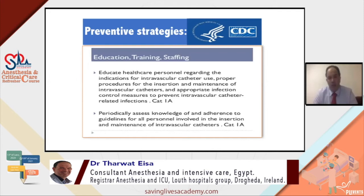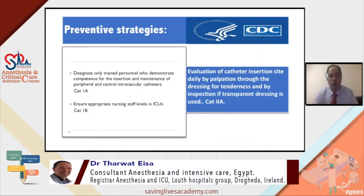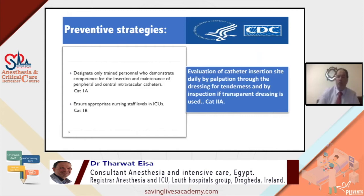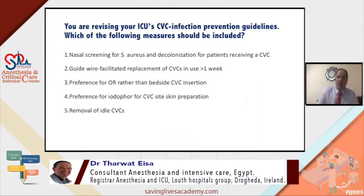Going through these prevention items: educate staff, periodically assess knowledge and adherence to guidelines, assess staff competency regularly, and ensure appropriate staffing levels in the ICU. Also, evaluate the catheter insertion site daily by palpation through the dressing for any signs of inflammation or discharge. Per evidence, hand hygiene is the single most effective precaution for preventing infection transmission between patients and healthcare workers.